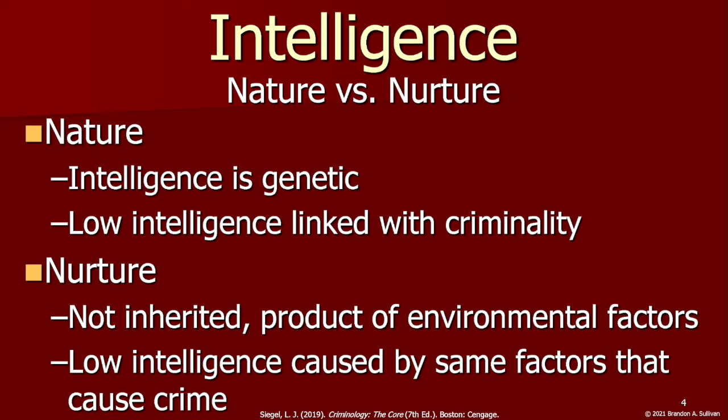It was tied to the belief that blacks and immigrants, particularly those coming from Ireland, Italy, and Germany at the time, were feeble-minded, had lower intelligence, were weak, and more likely to be criminal, therefore not suitable for society. The nature theory argues that intelligence is largely determined genetically, and low intelligence leads to criminality. On the flip side, the nurture theory argues that intelligence is not inherited but is largely a product of the environment. Low intelligence does not itself cause crime, but instead may result from the same environmental factors that do cause crime.